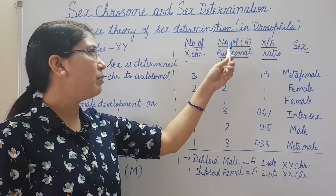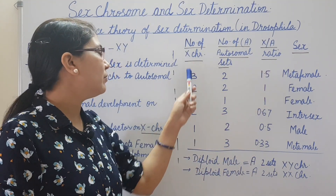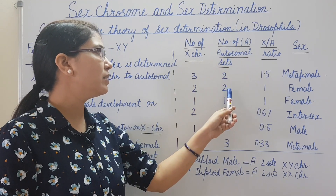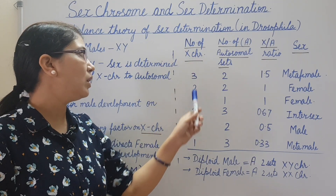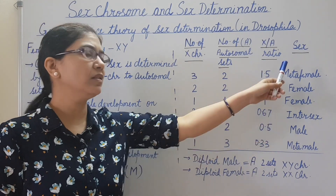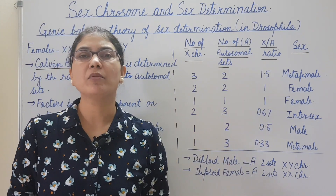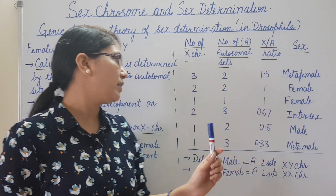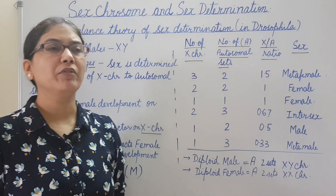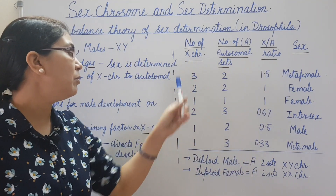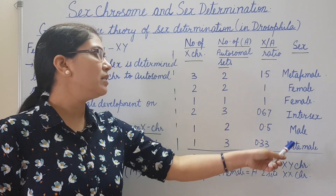In the genic balance system: when X chromosomes = 3 and autosomal sets = 2, XA ratio = 1.5, sex is meta-female. When X = 2, sets = 2, XA ratio = 1, sex is female. When X = 1, sets = 1, XA ratio = 1, sex is female. When X = 2, sets = 3, XA ratio = 0.67, sex is intersex. When X = 1, sets = 2, XA ratio = 0.5, sex is male. When X = 1, sets = 3, XA ratio = 0.33, sex is meta-male.